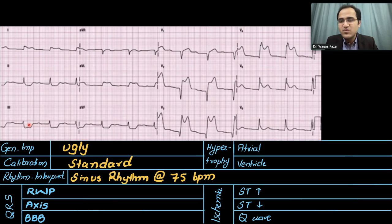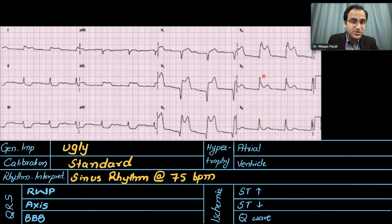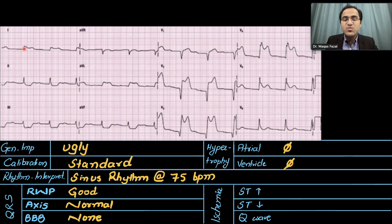For rhythm interpretation, counting large boxes between QRS complexes: one, two, three, four — giving 75 beats per minute. Sinus rhythm at 75 beats per minute. For R-wave progression in the precordial leads: V1 and V2 should be negatively deflected — and they are. V5 and V6 should be positively deflected — and they are. Normal R-wave progression. For the axis, looking at leads 1 and AVF: the QRS is pointing upward in both — normal axis.